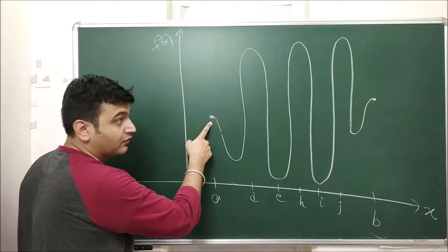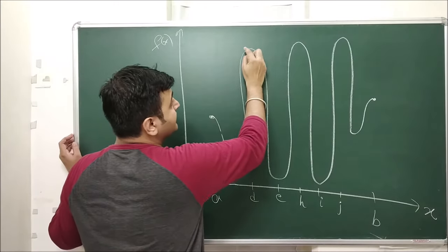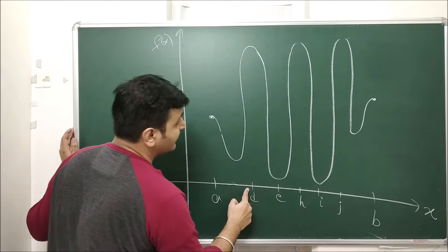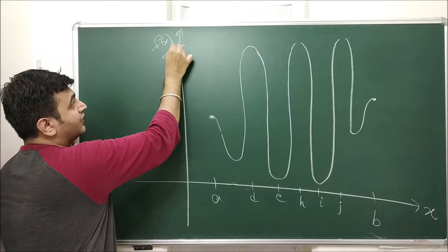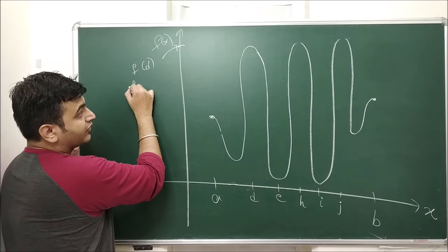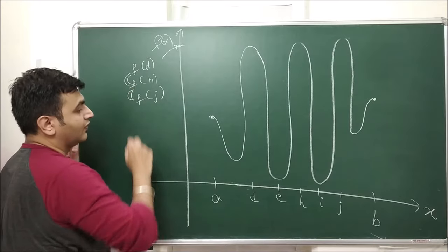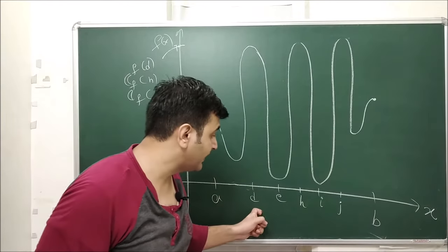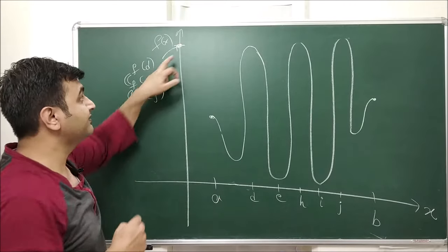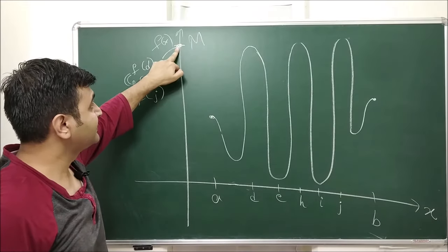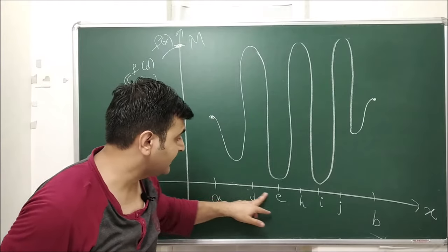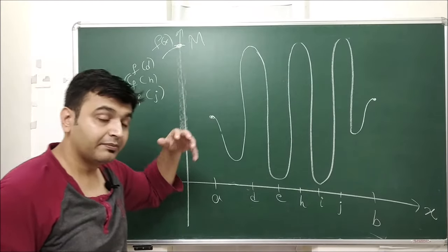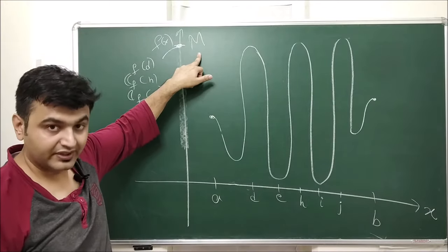Let me demonstrate that with an example. You can see points (a, f(a)) and (b, f(b)). Now if I call points D, H, and J, you can see that f(d), f(h), and f(g) are all at the same level — they are equal. So you are having the maximum value at three distinct points d, h, and g. Even though the maximum occurs at three different points, the maximum value is unique — let me call it capital M. You take any x from the domain and its image will be below M.